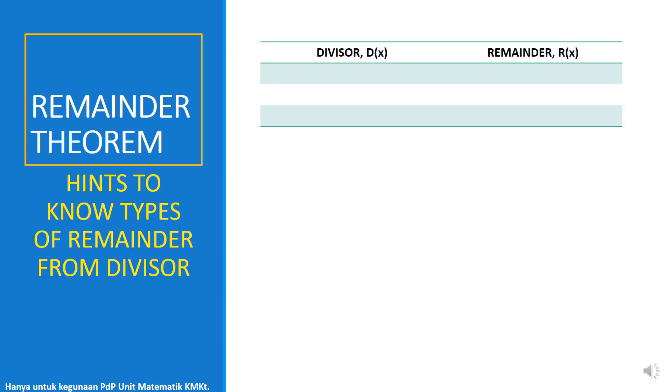From divisor, we can know the types of remainder. For example, if we have linear divisor, then we will get a constant remainder. If we have a quadratic divisor, whether in linear factor or in general equation of quadratic, then we will get a linear remainder.